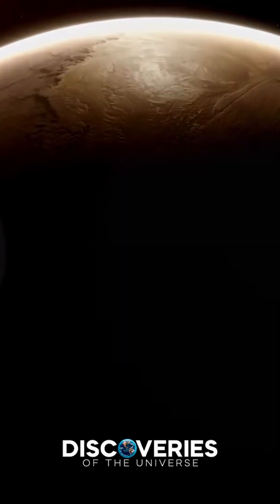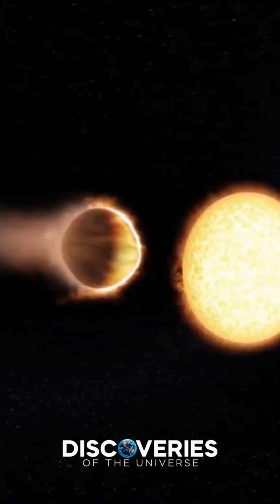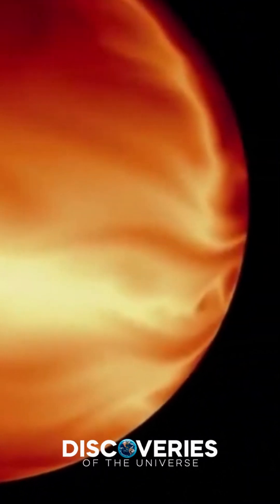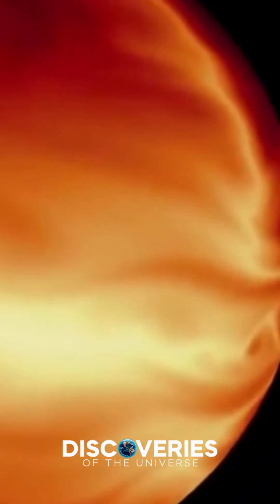Forming metallic clouds, winds reaching 1,700 km/h carry these elements to the planet's cooler night-side, where they condense and fall as molten iron, ruby, and sapphire rain.